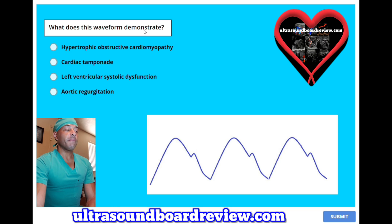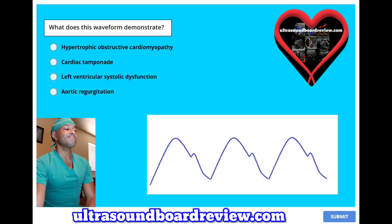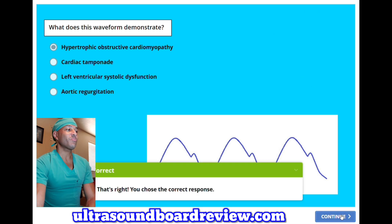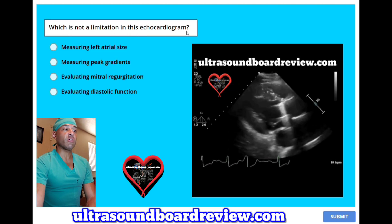What does this waveform demonstrate? A, hypertrophic obstructive cardiomyopathy; B, cardiac tamponade; C, left ventricular systolic dysfunction; or D, aortic regurgitation? The answer is A, hypertrophic obstructive cardiomyopathy, and this waveform represents pulsus bigeminis.